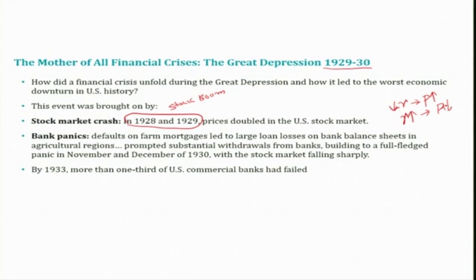But the Fed got more than it bargained for. When the stock market crashed in October 1929, it fell by 40 percentage by the end of 1929. That means this tight monetary policy led to one of the biggest crashes in stock prices in US history.